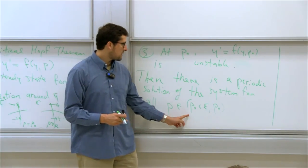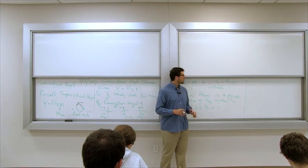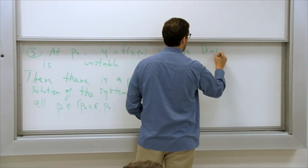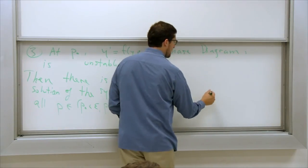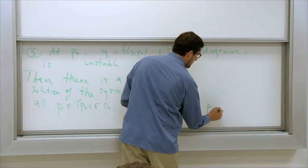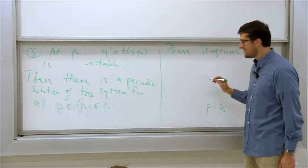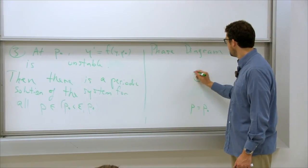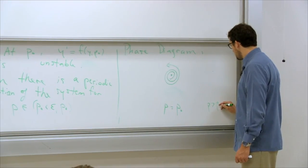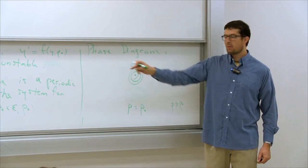So the conclusion is: there exists a periodic solution of the system for all p in the interval p-zero minus epsilon to p-zero, for some epsilon. So there exists some small epsilon such that in this whole interval there's always a periodic solution. Now, that periodic solution is going to look a little bit different. Let me tell you the phase diagram of this situation. For p equals p-zero, what behavior do we have around the steady state? Brian says it's unstable — that's right.